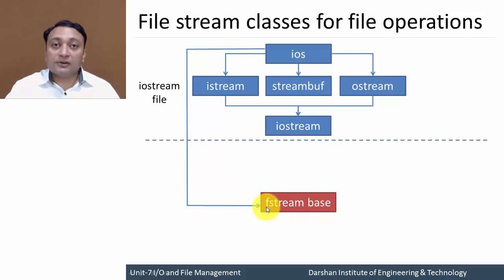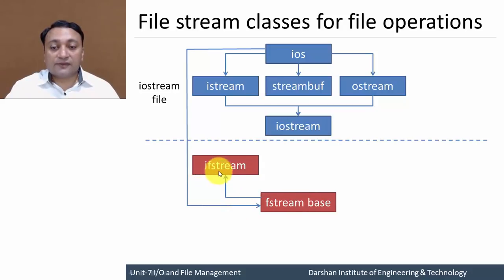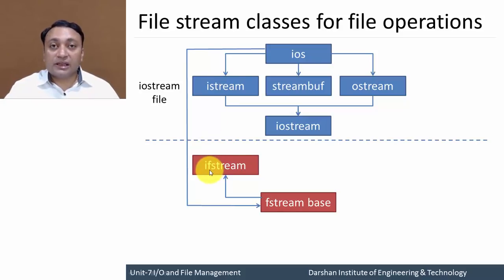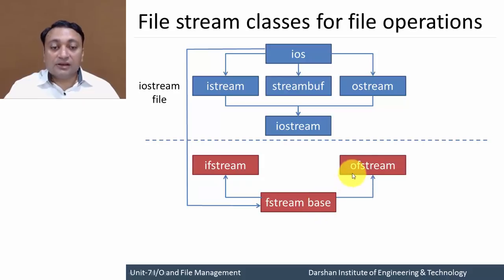From the ios class, one class derived is fstream_base, which will be used for file streams. From fstream_base there is one class derived called ifstream — the name itself suggests it will be used for input file stream. Whenever you are going to take any input from a file, you are supposed to use member functions of ifstream. The only difference in the name is that we have included the letter 'f' to indicate it is for file. Similarly, we derive ofstream class, which will be used to write output to a file.